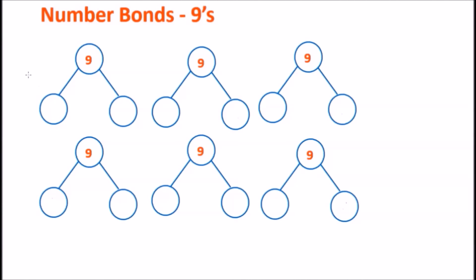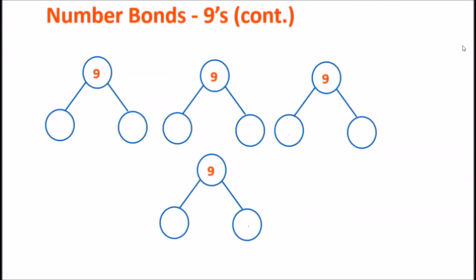Now let's write these down as number bonds. Nine is our whole. The parts were: zero and nine, then one and eight, then two and seven, then three and six, then four and five, then five and four — that's six so far. Continuing on a new sheet: six and three, then seven and two, then eight and one, and finally nine and zero. All together, ten number bonds that give us the number nine.